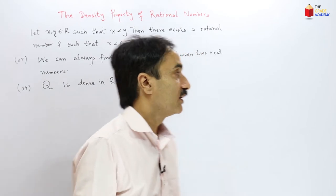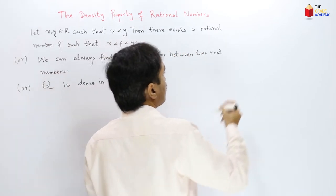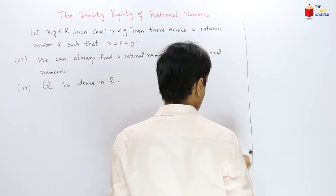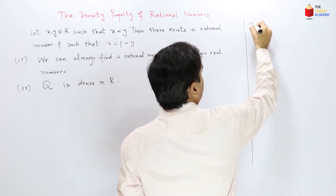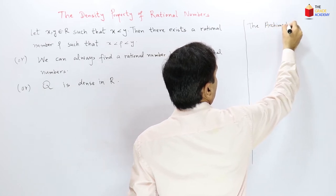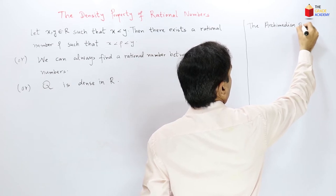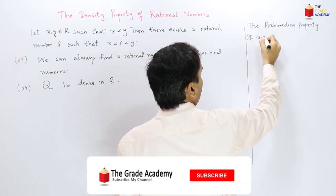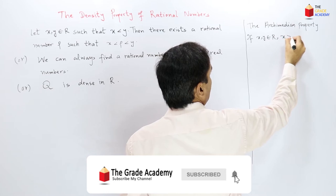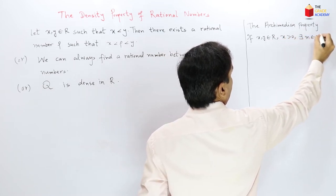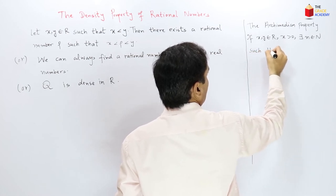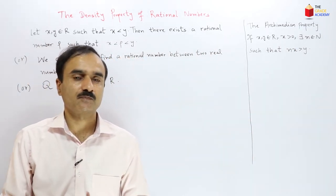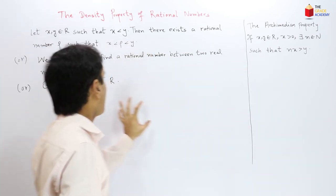We will prove this property by using the Archimedean property. The Archimedean property states that if x and y are real numbers and x is positive, then there exists a natural number n such that n times x is greater than y. We will use this to prove the density property.